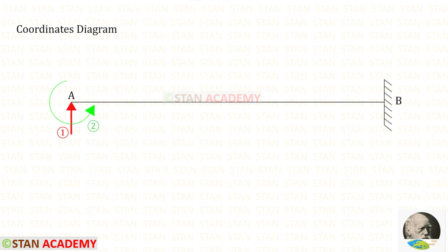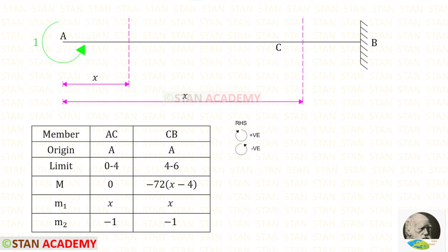Now we are going to find the moment M2. Our second coordinate is Ma, which we have kept in the anticlockwise direction. To find M2 we apply a unit moment in the direction of Ma. Up to both sections there is no load, only the unit moment acting in the anticlockwise direction, so it will be negative. Therefore M2 = -1.